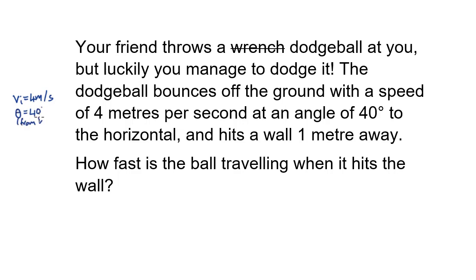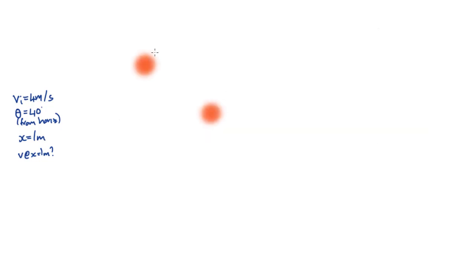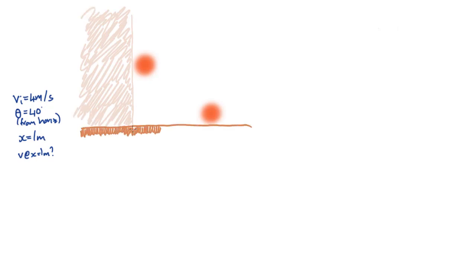There's a lot of information here, so the first thing to do is to draw a diagram to help keep all that information close by. The only part that we care about is what happens after the dodgeball bounces off the ground, so that's what we'll draw.